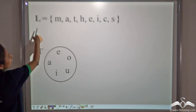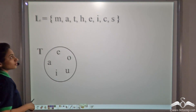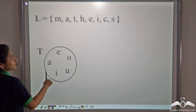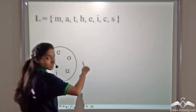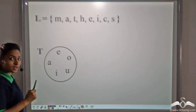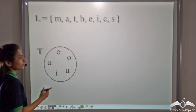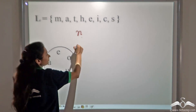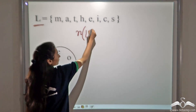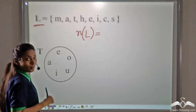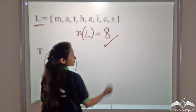Now try writing this. L is a set — try writing the cardinal number of this set. First, let us count the number of elements: 1, 2, 3, 4, 5, 6, 7, 8. The number of elements in this set is 8. So the cardinal number of this set is 8. We write it as n(L) = 8.